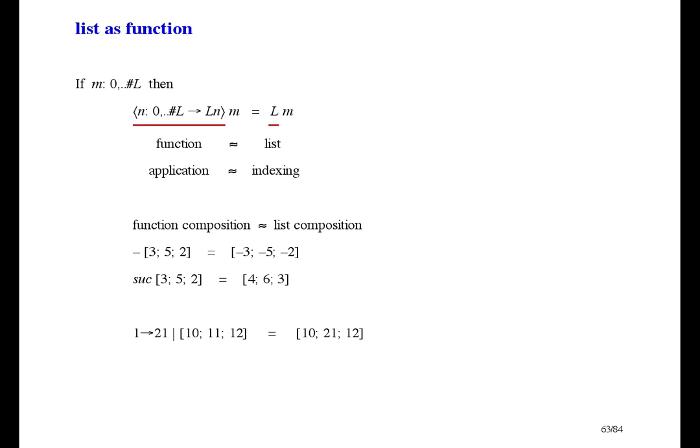Do you remember the list modification operator from list theory? This one is a list whose item 1 is 21, and otherwise it's the same as 10, 11, 12. Another way to look at it is that 1 arrow 21 is a function that maps 1 to 21, and the list 10, 11, 12 is a function also, and between them there's a selective union operator. The result of that selective union is a function that's like the list 10, 21, 12.